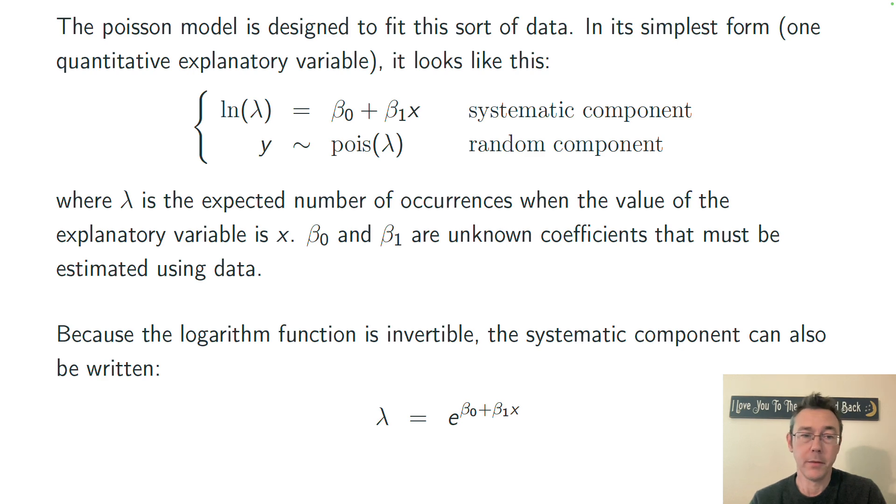Incidentally, because the logarithm here on the left-hand side of my systematic component is invertible, the systematic component can also be written by taking the exponential function of both sides, e to the beta 0 plus beta 1 x. That's just another way of writing this model.